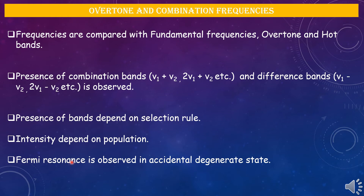When the simple harmonic oscillation approximation is lifted, the possibility of first, second, and third overtones are observed for diatomic molecules, though intensities fall off rapidly. Along with these, combination bands and difference bands are observed. Combination bands arise due to the addition of two or more fundamental frequencies or overtones; difference bands are related to differences of fundamental frequencies and overtones, though both satisfy the selection rule but appear at lower intensities.